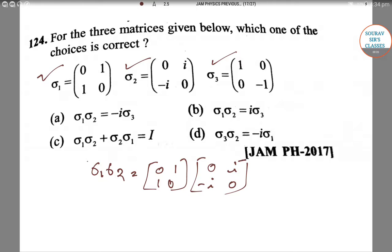This equals minus i zero, zero i. If we take the multiplication, then we get this value. This can be written as minus i into one zero, zero minus one.